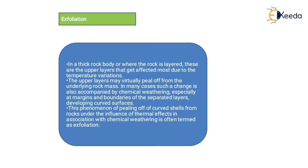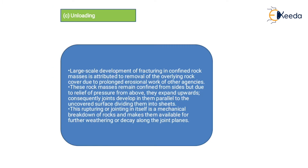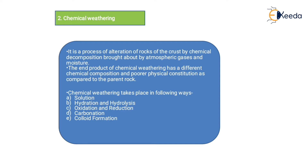Those are all the types of mechanical weathering: frost action, thermal effect/insolation, exfoliation, and unloading. The next is chemical weathering. It is a process of alteration of rock of the crust by chemical decomposition brought about by atmospheric gases and moisture. The end product of chemical weathering has a different chemical composition and physical constitution compared to the parent rock. Chemical weathering takes place by: solution, hydration, hydrolysis, oxidation, reduction, carbonation, and colloid formation.